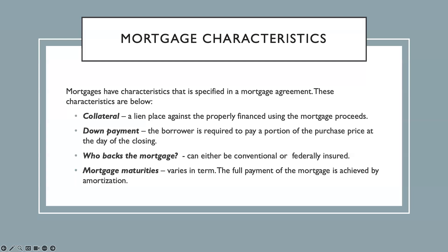Aside from having collateral, it is also required that the mortgagee or the borrower must pay a down payment — a portion of the purchase price — at the day of closing. Just like in any other transaction where a vendor requires a down payment before they start working on an item, in a mortgage a down payment is required so that the bank or lending company is assured that the mortgagee has skin in the game. They are also required to shell out a certain amount of money to help secure the property.